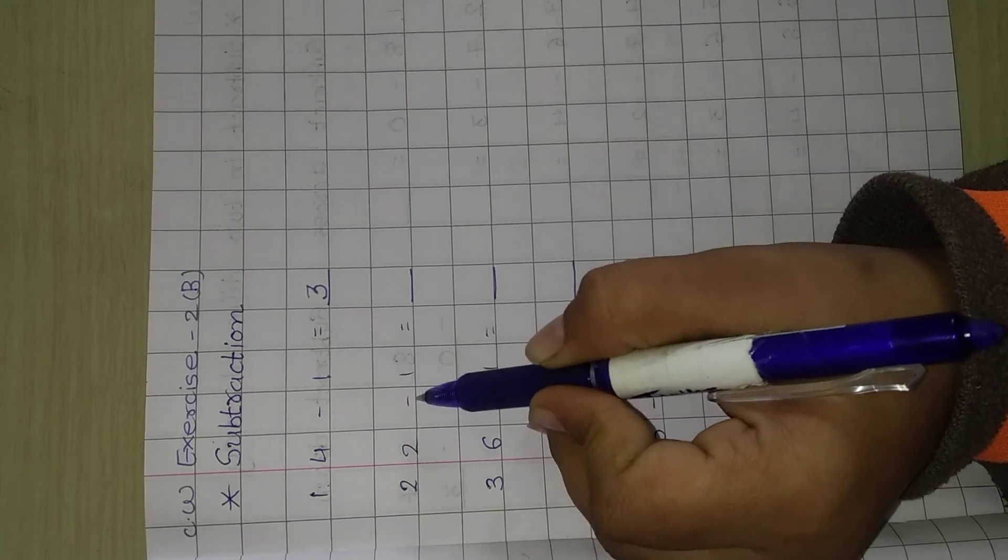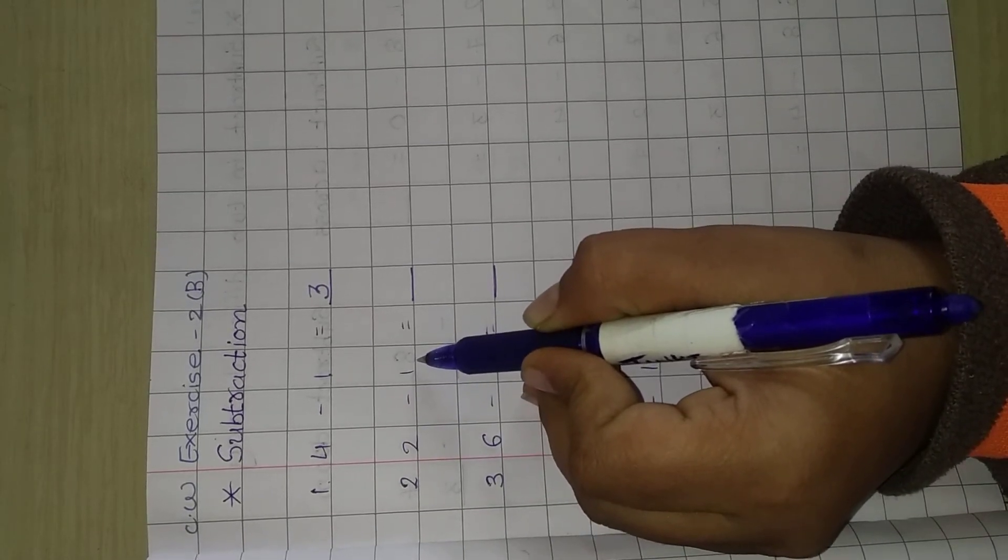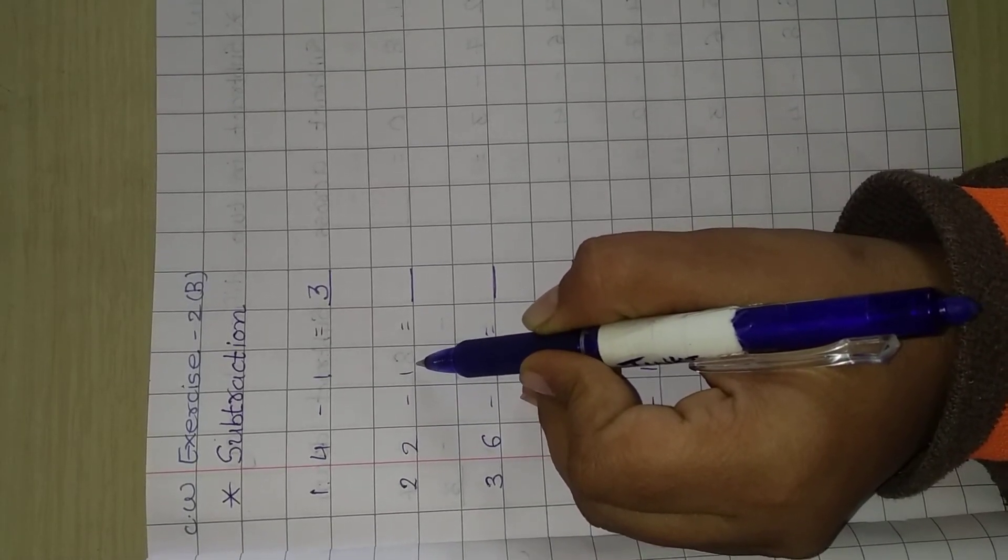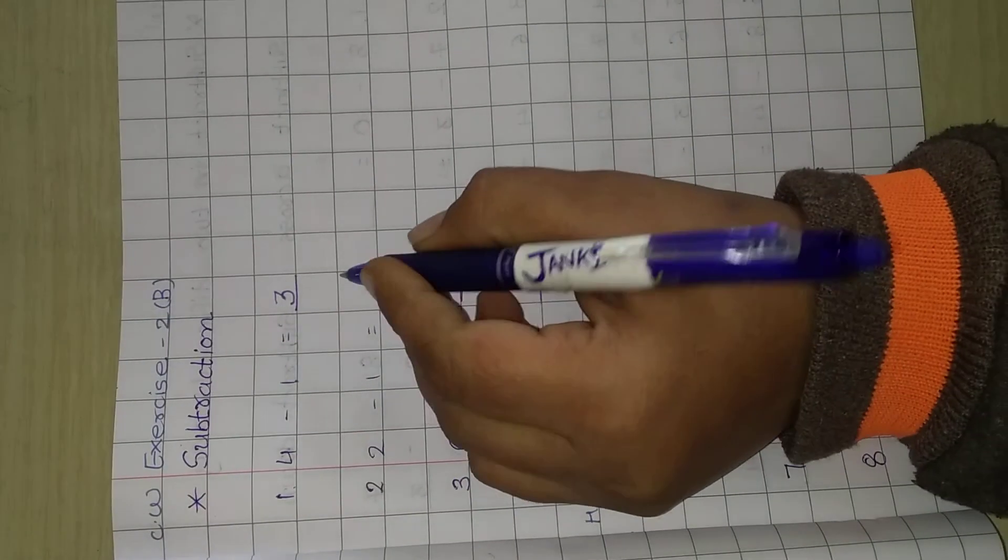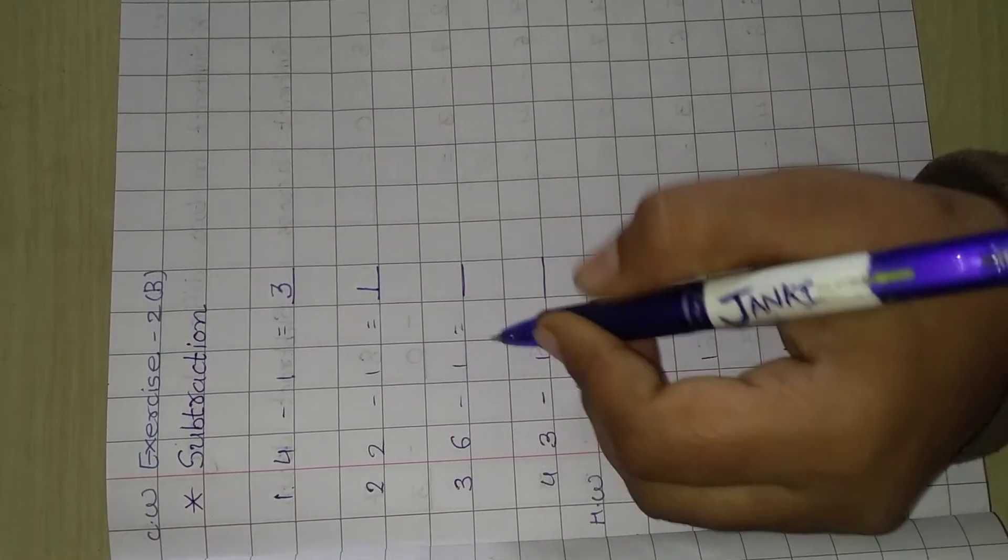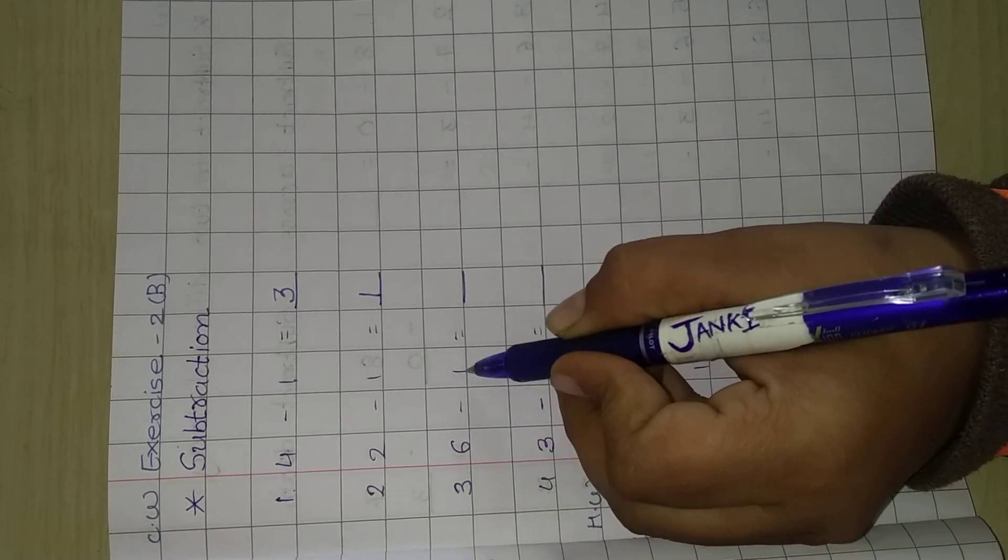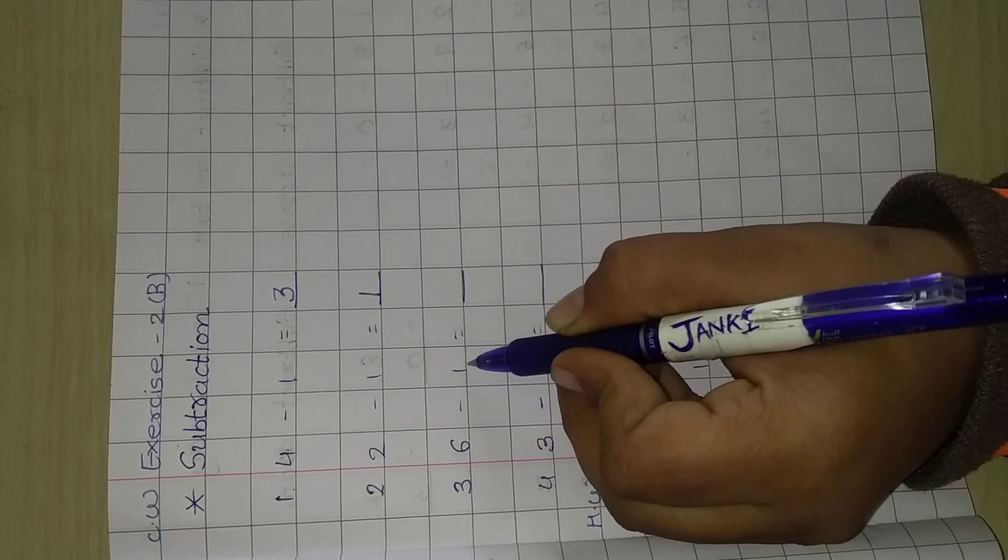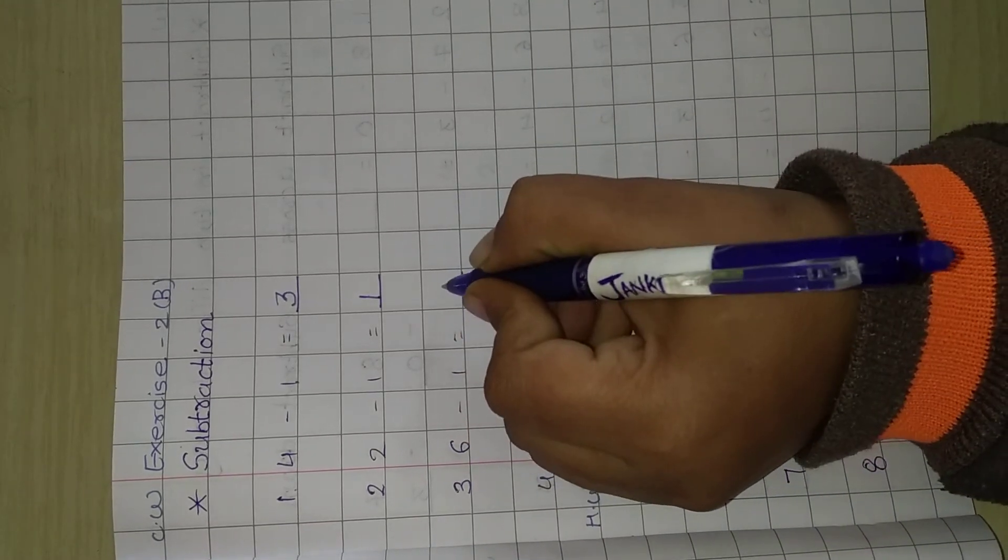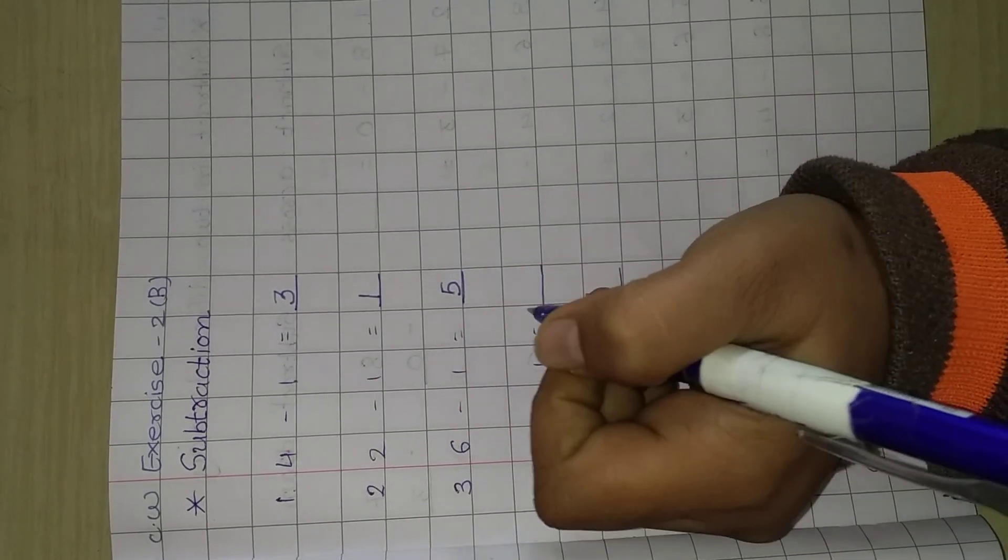Next, 2 minus 1. What number comes before 2? 1. So we write in the blank 1. Next, 6 minus 1. What number comes before 6? 5. So we write in the blank 5.